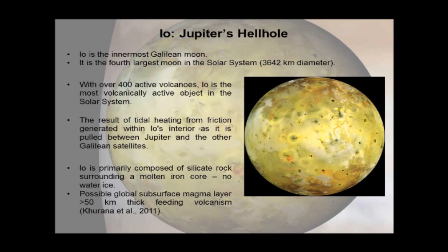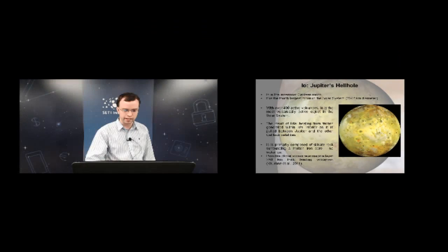IO is an anomaly amongst outer solar system satellites — it's the only one that doesn't feature any ice on its surface. It's believed to be composed of silicate rock surrounding a molten iron core. One of the most recent developments in understanding IO's interior is a 2011 study by Karana et al., which posits a possible global subsurface magma layer that may be feeding IO's volcanism.